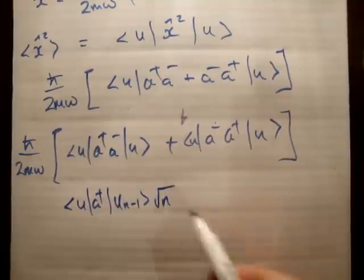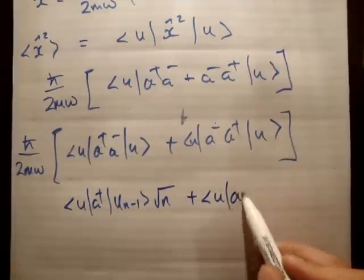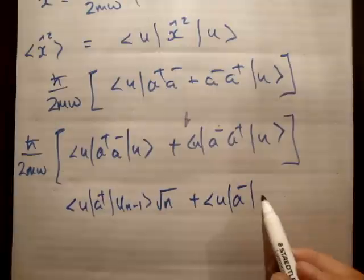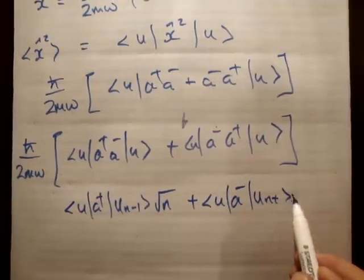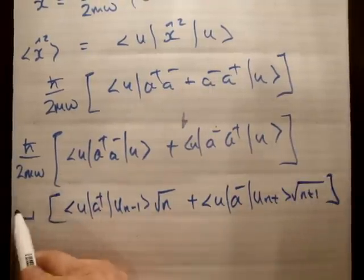but we need to multiply by root n, and this one we're going to have u, we're going to have a minus, we're going to have u n plus 1, and root n plus 1. And of course we have our constants out front as well.